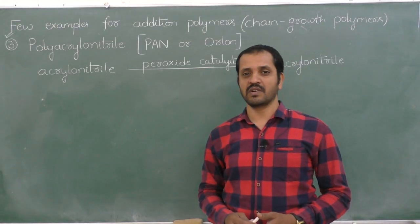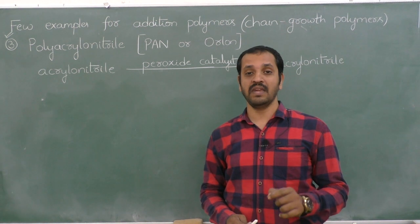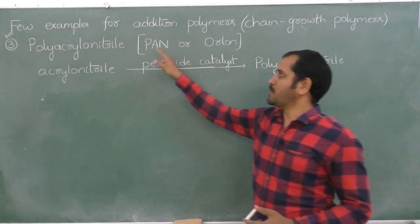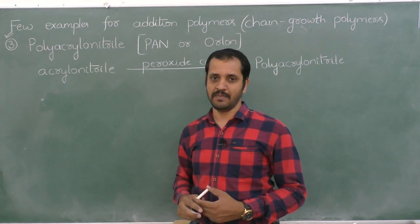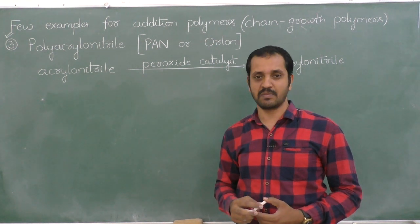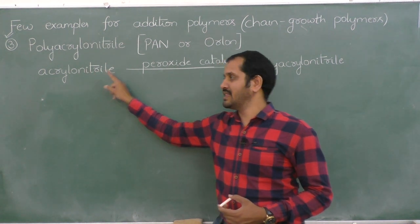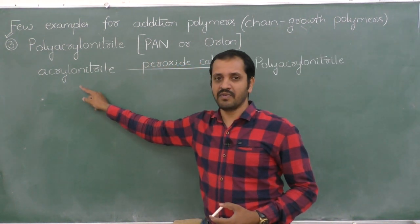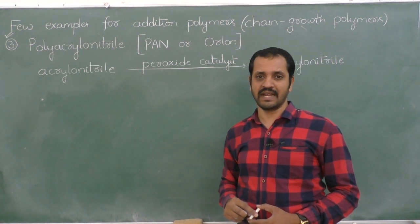The third example for addition polymers is polyacrylonitrile, also called PAN or Orlon. Its monomeric unit is acrylonitrile. It is obtained by the polymerization of acrylonitrile in the presence of a peroxide catalyst.